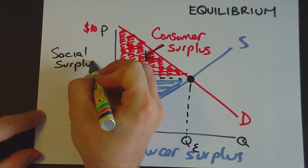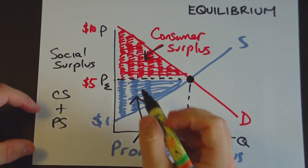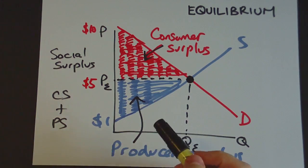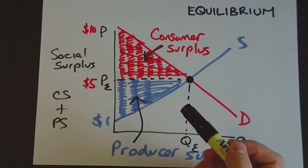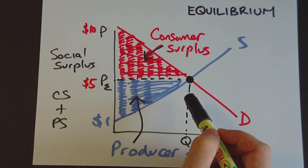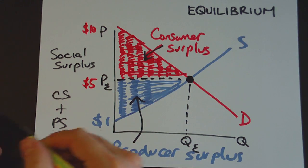And social surplus is simply the consumer surplus plus the producer surplus. So it's this entire area here. Now, you can often actually work out just using the area of a triangle or area of rectangles, whatever the shapes are. You can often work out the actual dollar amounts of this consumer surplus. So, for example,